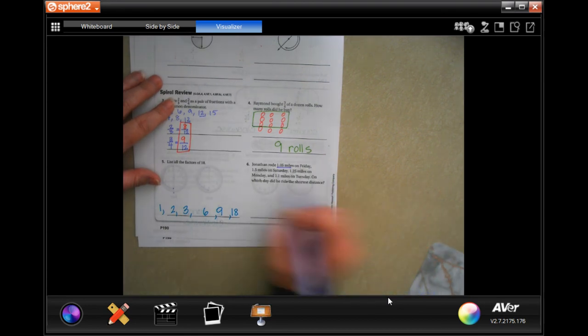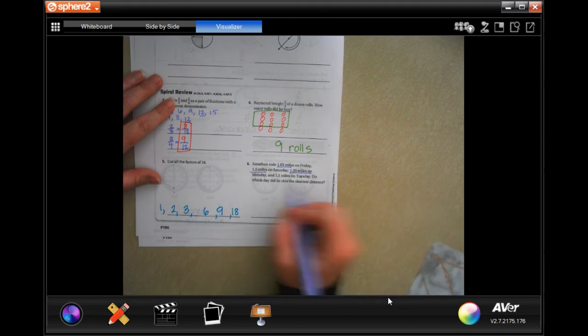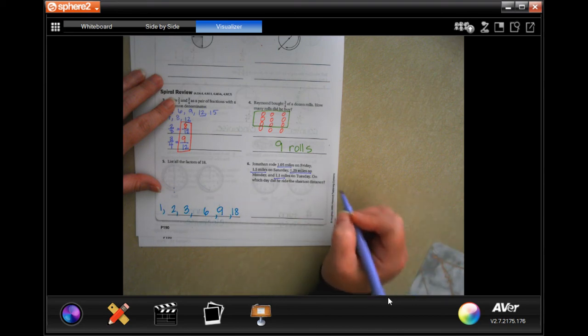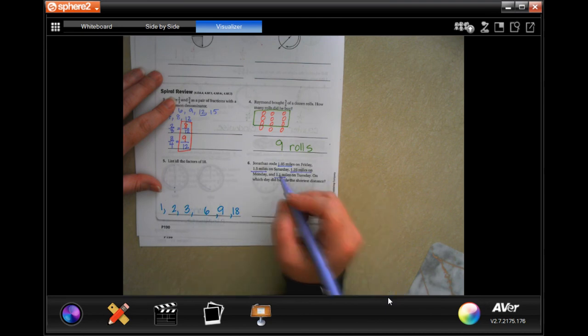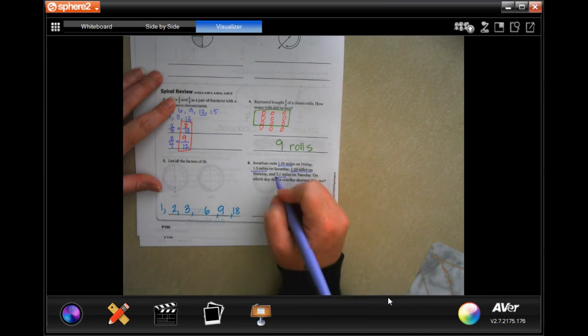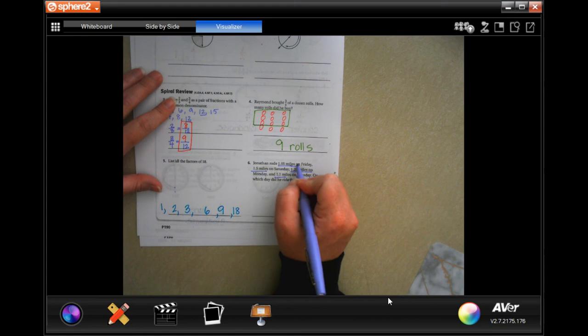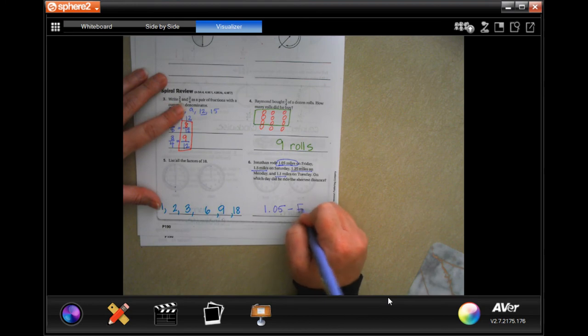Jonathan rode 1.05 miles on Friday, 1.5 miles on Saturday, 1.25 miles on Monday, and 1.1 miles on Tuesday. On which day did he ride the shortest distance? They all start with one, so one's not going to help us. Next we have a zero, a two, a five, and a one. Well, the smallest number is 1.05, which would make it Friday.